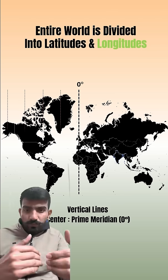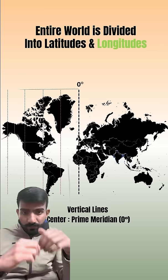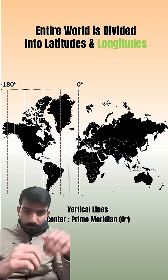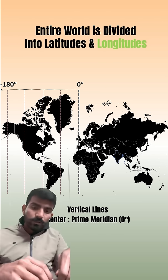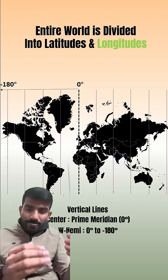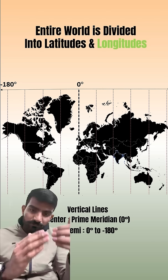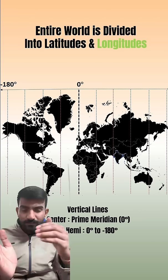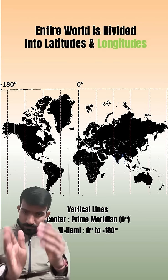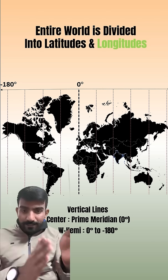The same goes for longitudes. These are vertical lines. The center one is called the prime meridian. All the countries on the left are part of the western hemisphere and their longitudes vary from zero to minus 180, and on the right are from zero to 180.